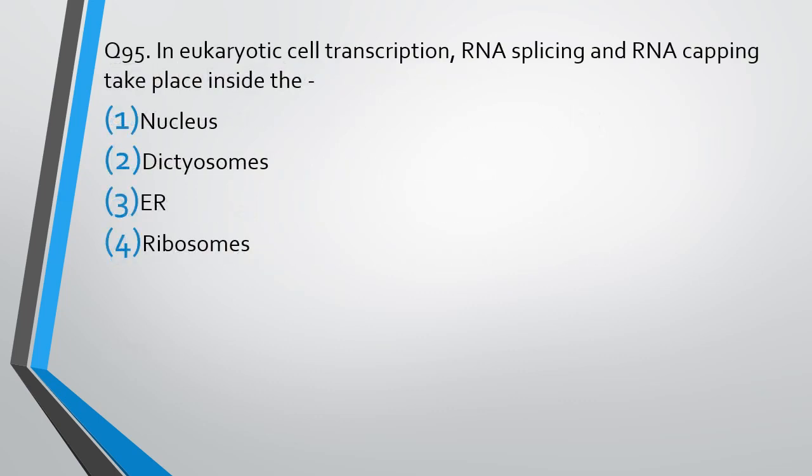Question number 95. In eukaryotic cell transcription, RNA splicing and RNA capping takes place inside: nucleus, dictyosome, endoplasmic reticulum, or ribosomes. The correct answer is option 1, nucleus.